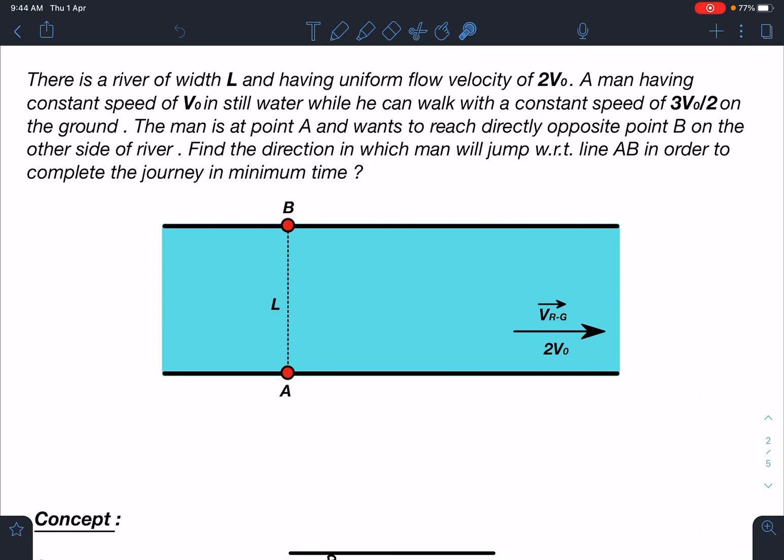There is a river of width L and having uniform flow velocity of 2V₀. A man having constant speed of V₀ in still water while he can walk with a constant speed of 3V₀/2 on the ground. The man is at point A and wants to reach directly opposite point B on the other side of the river. Find the direction in which man will jump with respect to line AB in order to complete the journey in minimum time. So I hope you can see this diagram here. There is a river and we are assuming uniform flow for the river.